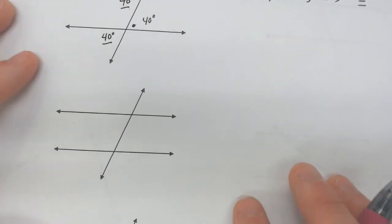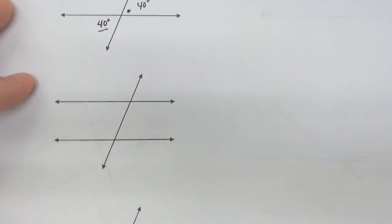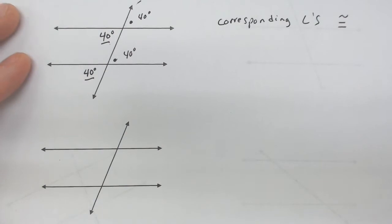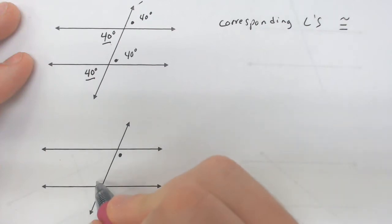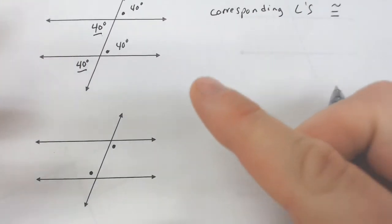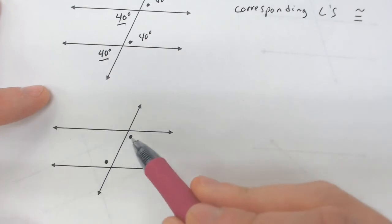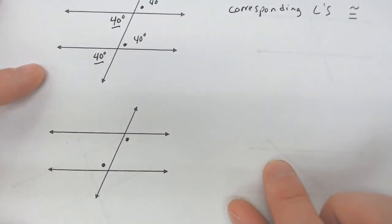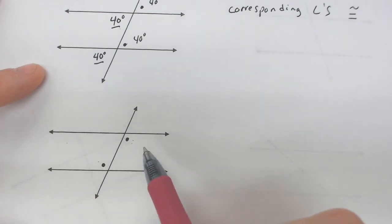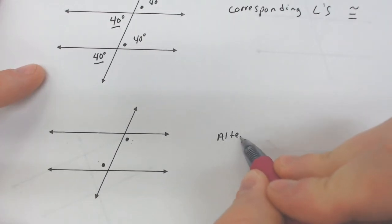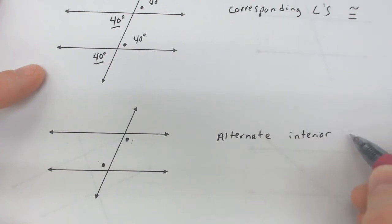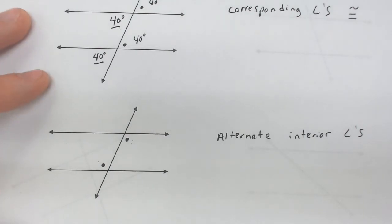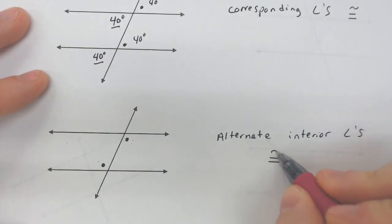The next one we're going to deal with is alternate interior angles, which are on the inside. If you think of the parallel lines as a sandwich, these angles are on the inside of that sandwich and on opposite sides of the transversal — that is why they are called alternate interior angles. These are also going to be considered congruent.